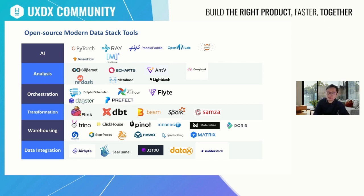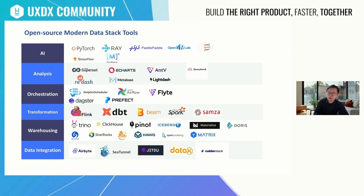I know that ChatGPT is very hot these days. Actually, the model used to train ChatGPT is based on Ray, which is also an open source project. And also we have PyTorch, Jupyter, TensorFlow, MindSpore, PaddlePaddle, and OpenMLDB — these are some open source AI projects. So you can see there are many, many open source modern data stack tools.